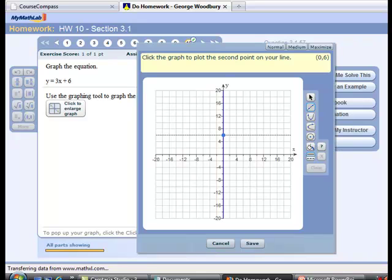To graph the second point at 1, 9, I move 1 to the right, and then up by 3 until I get to a height of 9. Click again.